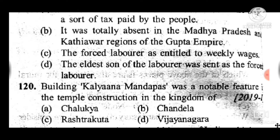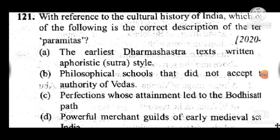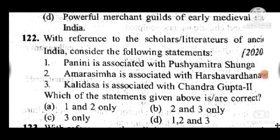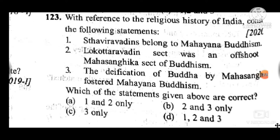Question 121: With reference to cultural history of India, the correct description of the term 'Paramitas' is C — perfections whose attainment led to the Bodhisattva's path. Question 122: With reference to scholars of ancient India, answer is C — three only; Kalidasa is associated with Chandragupta II. Question 123: With reference to religious history of India, answer is B — two and three only are correct; the Lokottaravadin sect was an offshoot of the Mahasanghika sect of Buddhism.